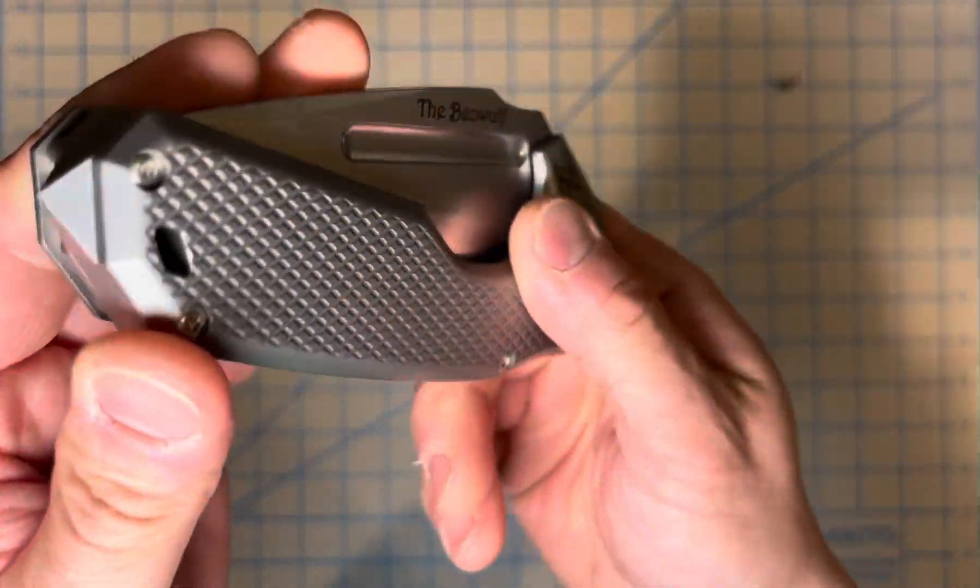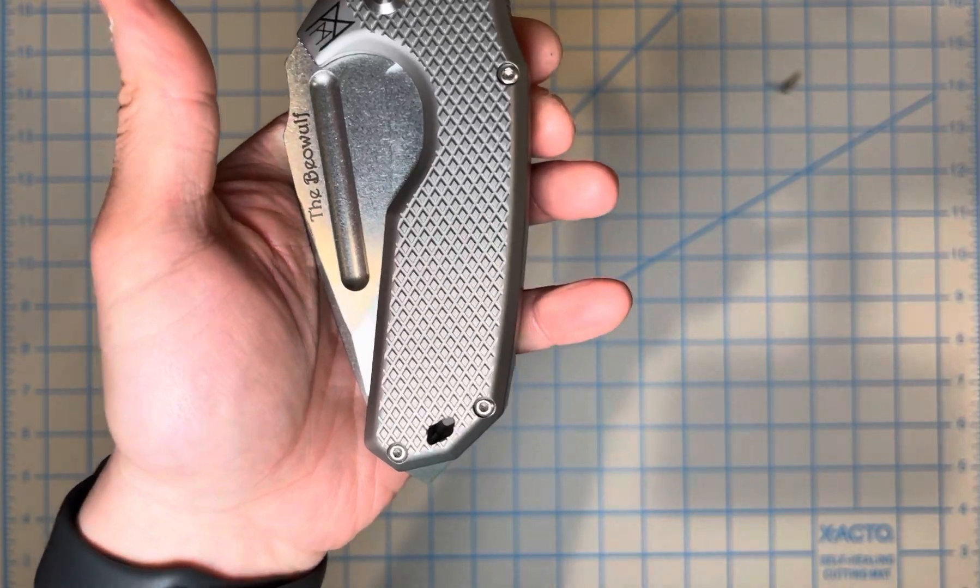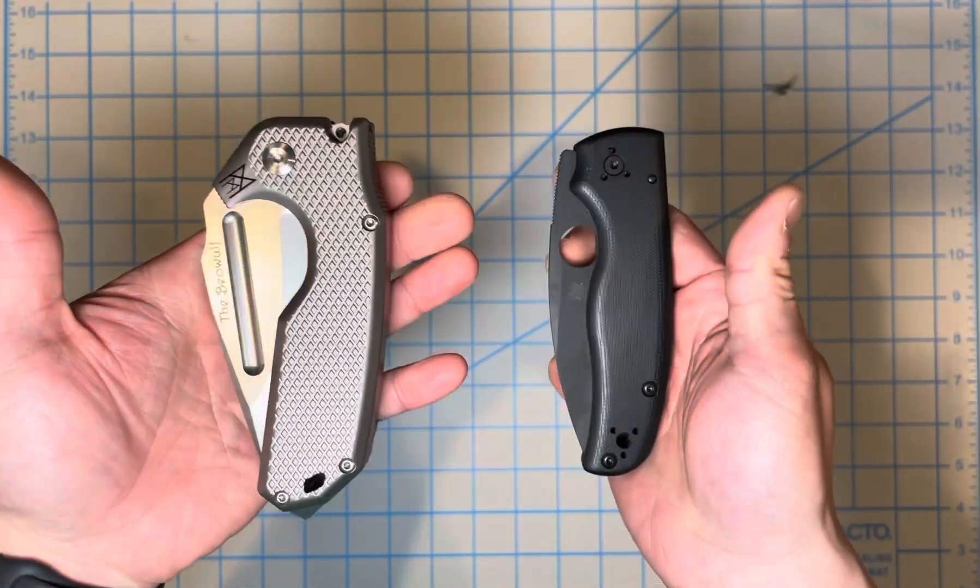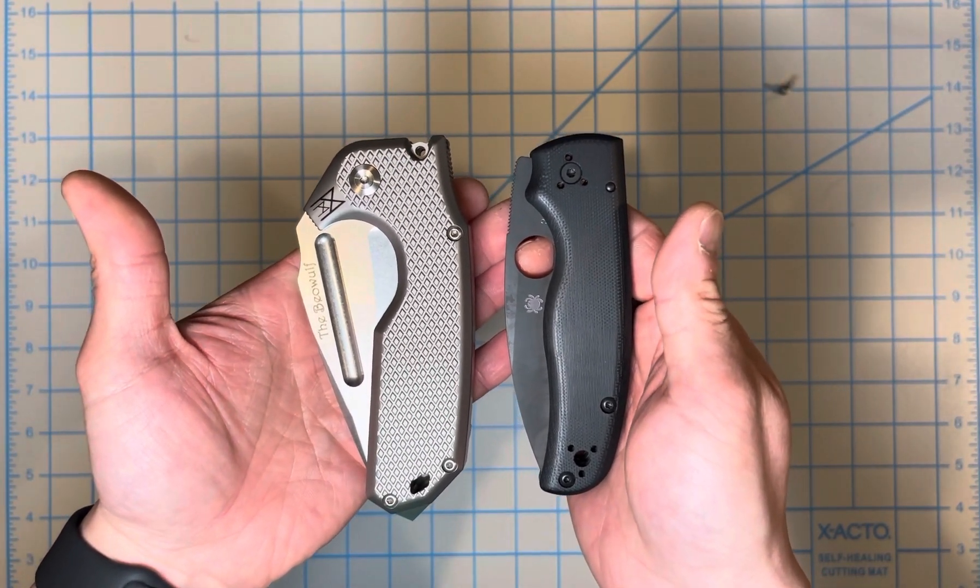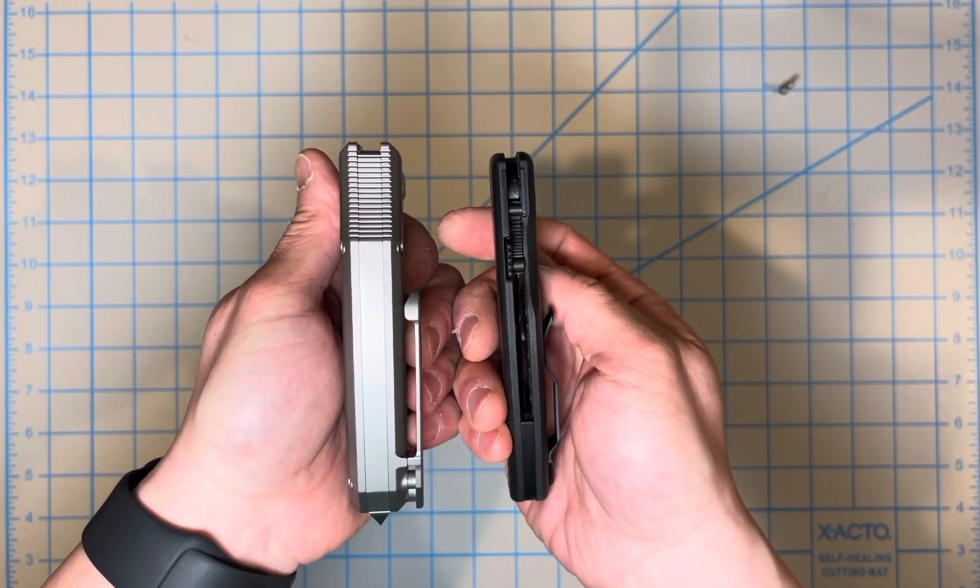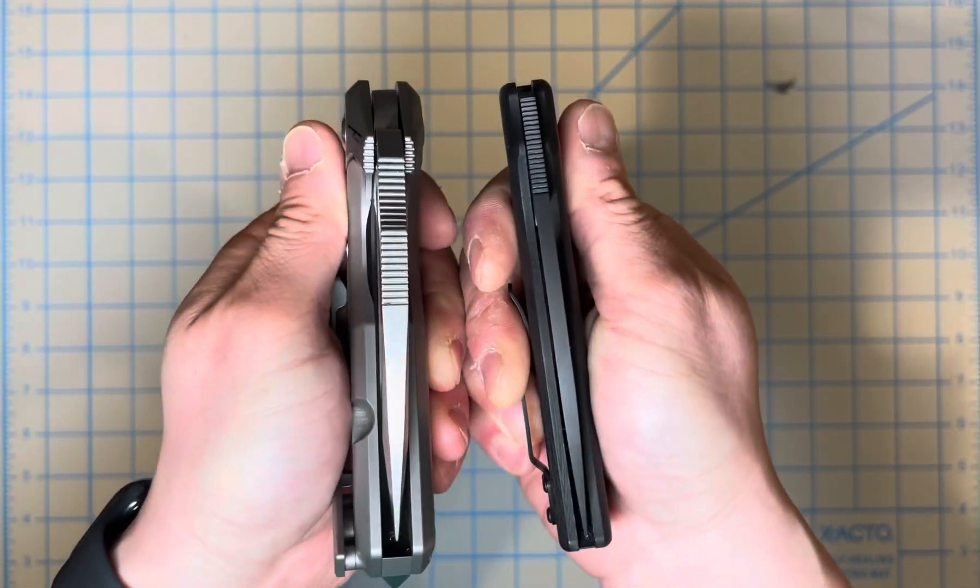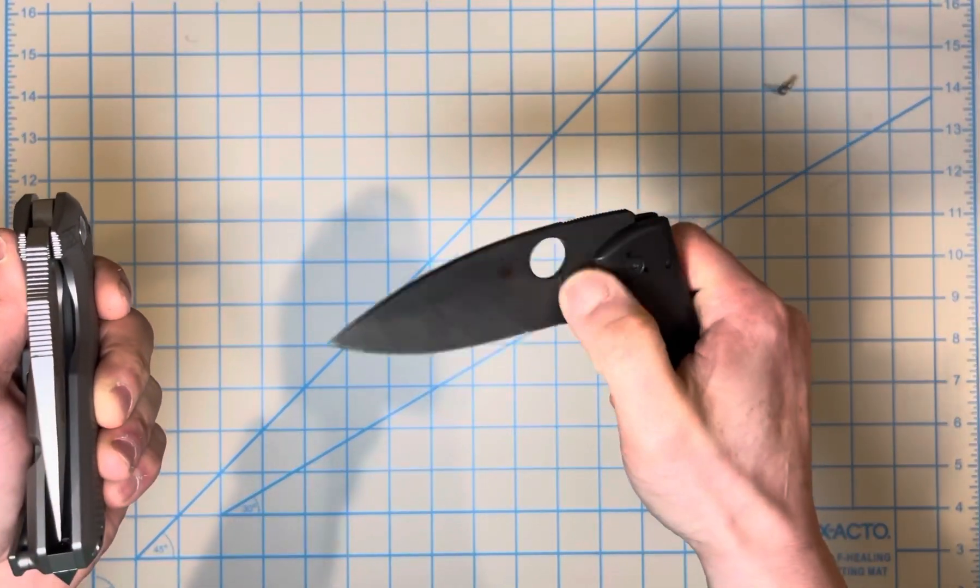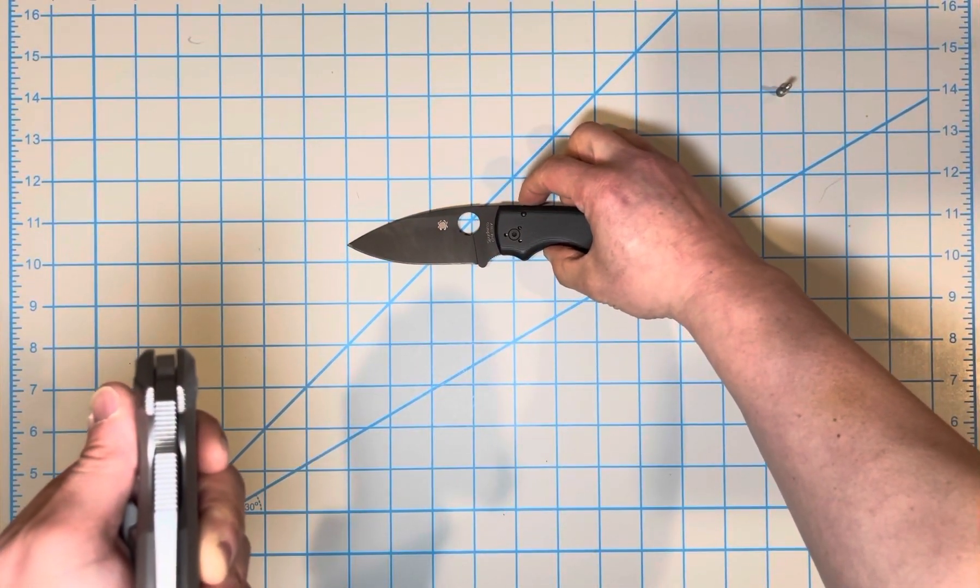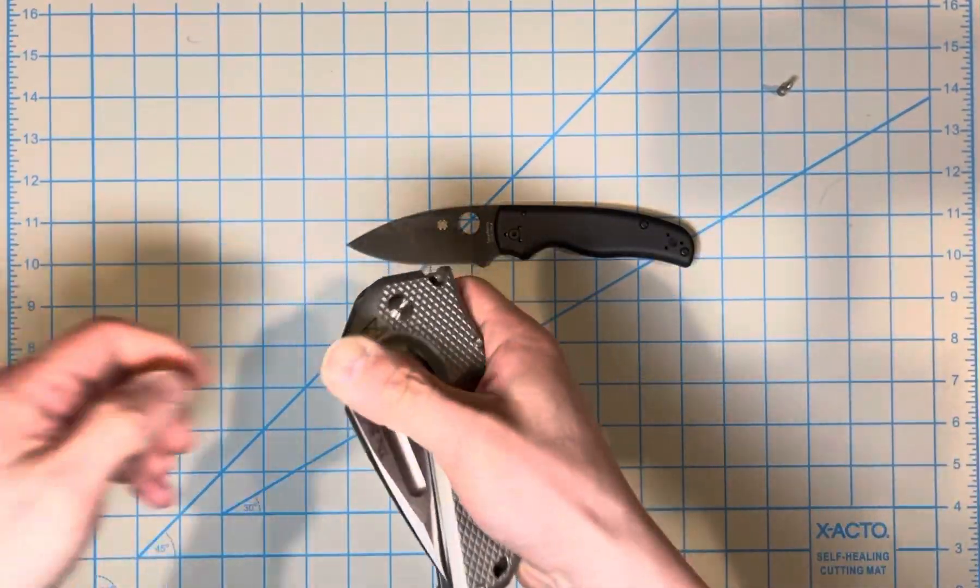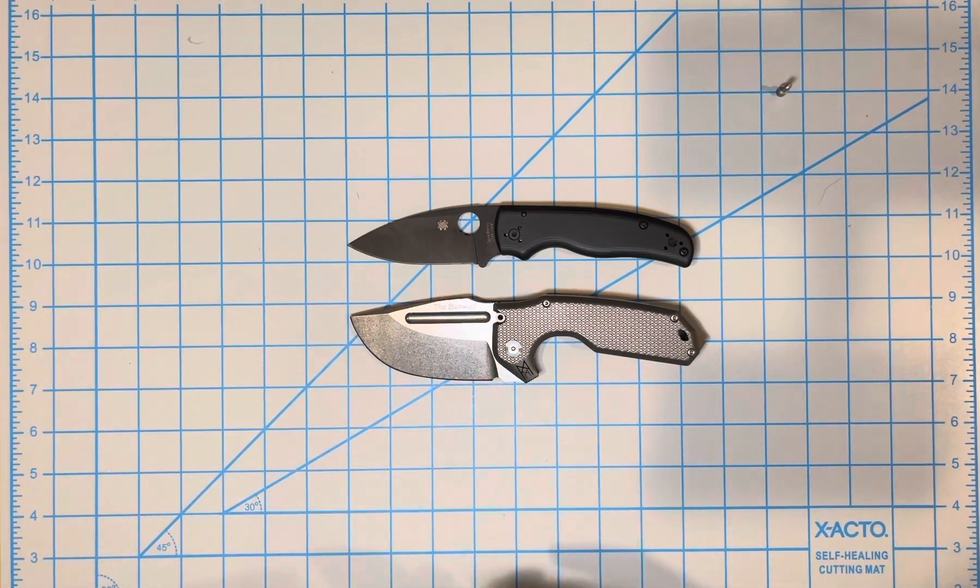It's pretty cool. Let me just give you some size comparison. So this is the Spyderco Shaman. That's what it looks like right next to the Beowulf. Look at how thick it is. Look at the blade spine between the two. It's not really that much longer but it's thick.